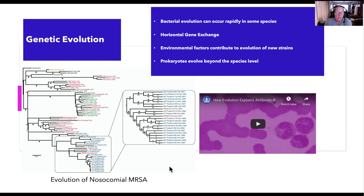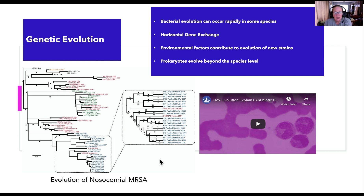Oftentimes, in addition to their own horizontal gene exchange, some of that can be regulated or stimulated through environmental factors. Lots of different environmental factors can contribute to evolution of new bacterial strains, such as presence of an antibiotic or changes in temperature, salinity, and nutrient contents, as well as that horizontal gene exchange that occurs between bacteria.